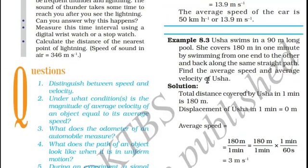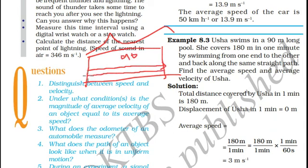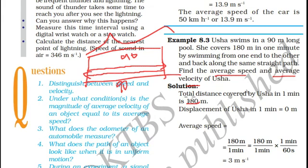Now let us see example 8.3. Usha swims in a 90-meter long pool. She covers 180 meters in 1 minute by swimming from one end to the other and back along the same straight path — 90 meters forward and 90 meters back. In speed, we only concentrate on how fast an object moves, not the direction. When dealing with velocity, we consider both speed and direction — in this case, forward and backward motion. The total distance covered by Usha in 1 minute is 180 meters.